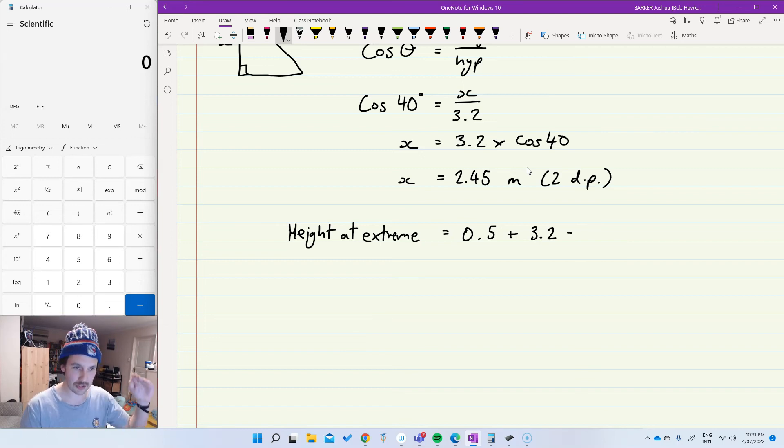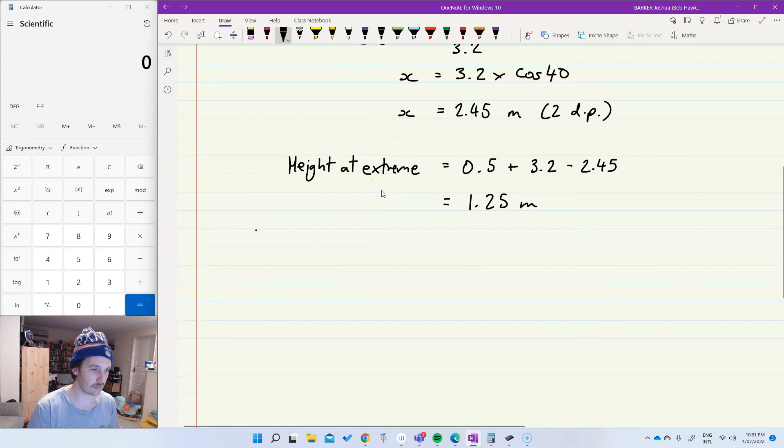Take away the difference between that and where it is at the top. So 2.45, which is going to give me 3.2 take 2.45 should give you 1.25 meters. Okay. And worded questions need a worded answer ideally. So therefore height at extreme is 1.25 meters. And if you're feeling extra fun, you can give it a nice highlight like that. Okay.